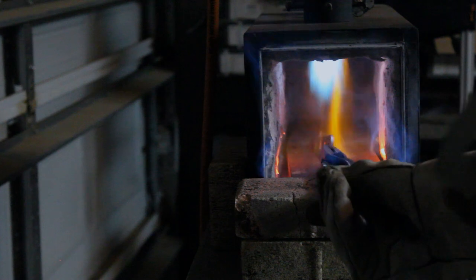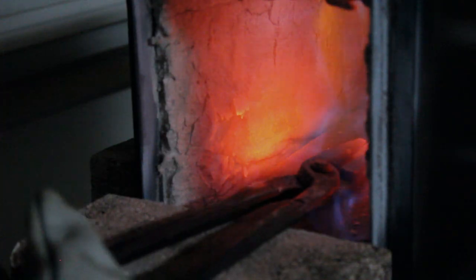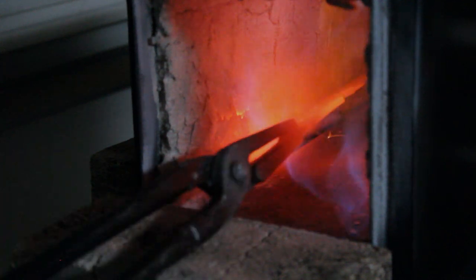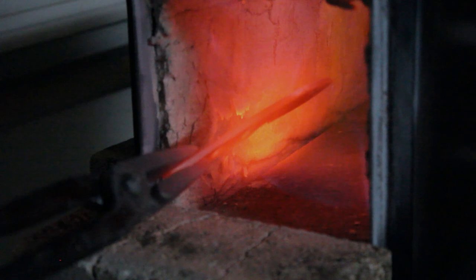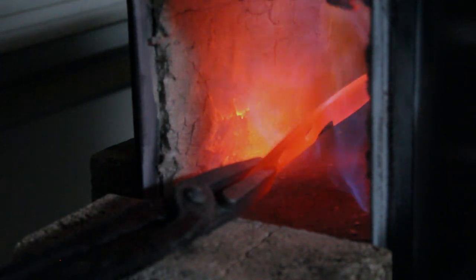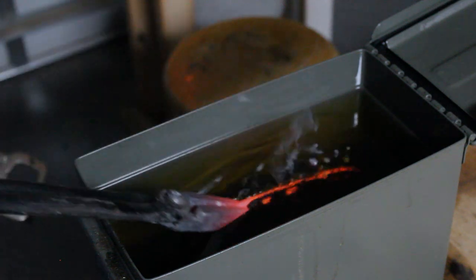For the heat treatment I will start off by doing two normalization cycles where I bring the knife up to non-magnetic and let it air cool. After that I'll bring the knife up to non-magnetic or just past it a little bit and I will hold it at that temperature and that color for about five to ten minutes and then I'll quench the knife.